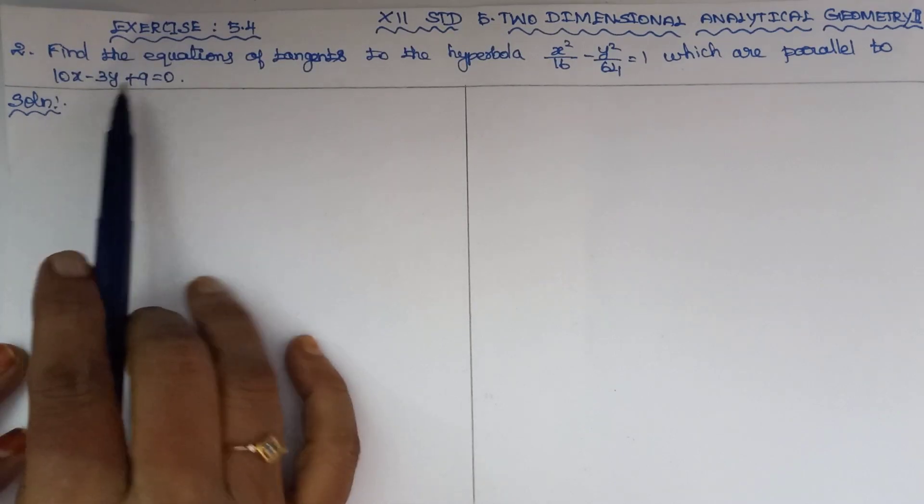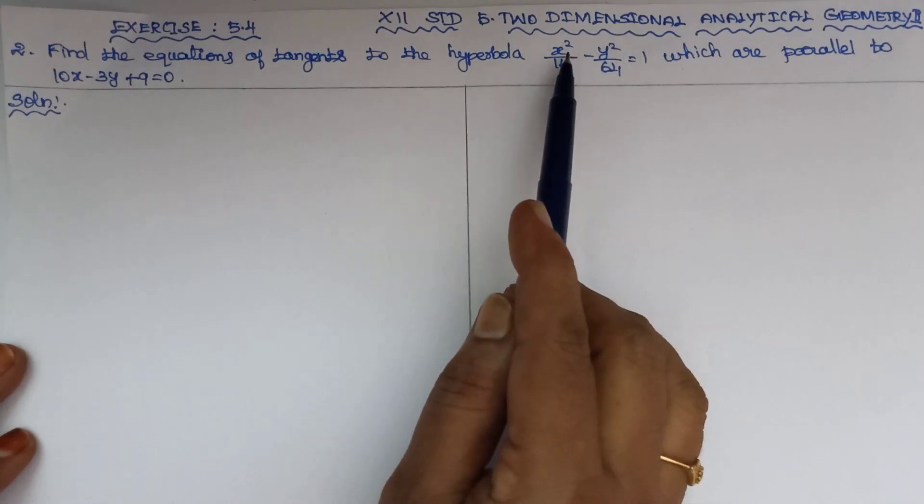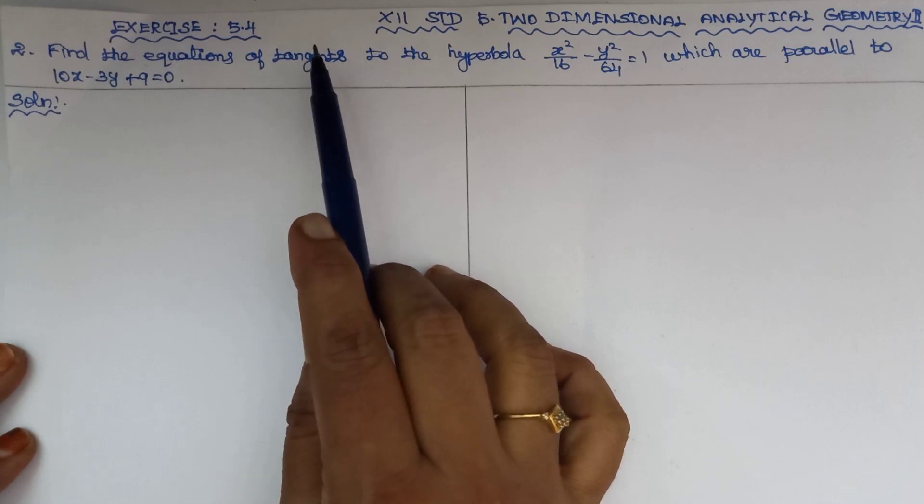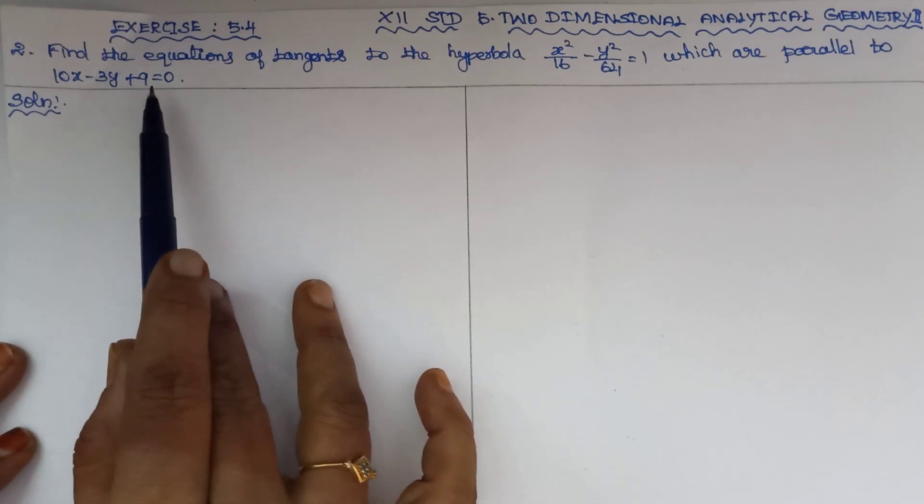to 10x minus 3y plus 9 equal to 0. That is the hyperbola equation for tangents. Find out the tangents which are parallel to 10x minus 3y plus 9 equal to 0.